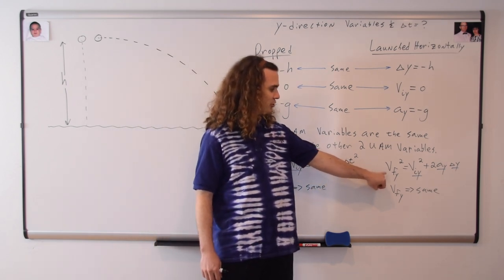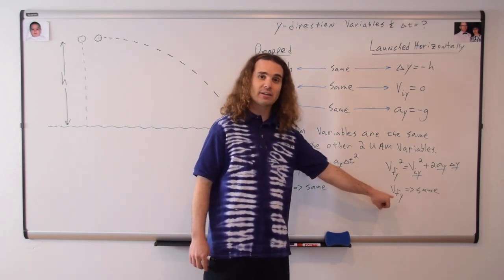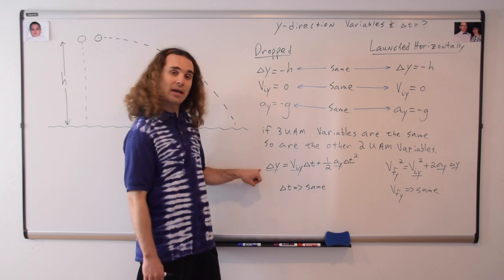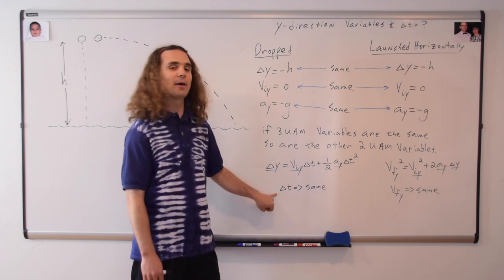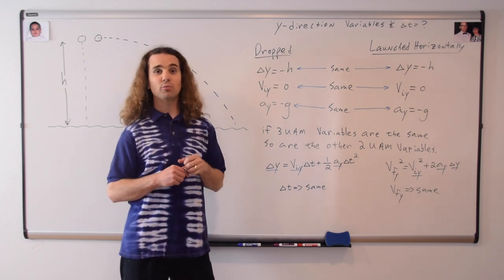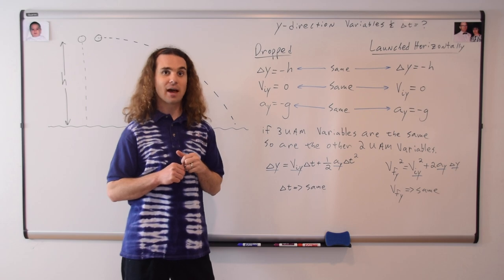Correct. If three of the UAM variables are the same, then so are the other two UAM variables. More specifically, in this equation, you can see that the velocity final in the y direction will be the same, and in this UAM equation, you can see that the change in time will be the same. Therefore, both will land at the exact same time.